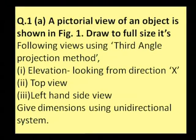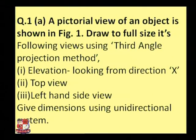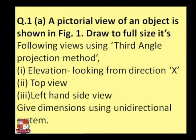Let's have a look at question number one. The question says that we need to draw orthographic projections using the third angle projection method. We need to draw three views: first would be elevation, second would be top view, and third would be left hand side view. The dimensions should use the unidirectional method.